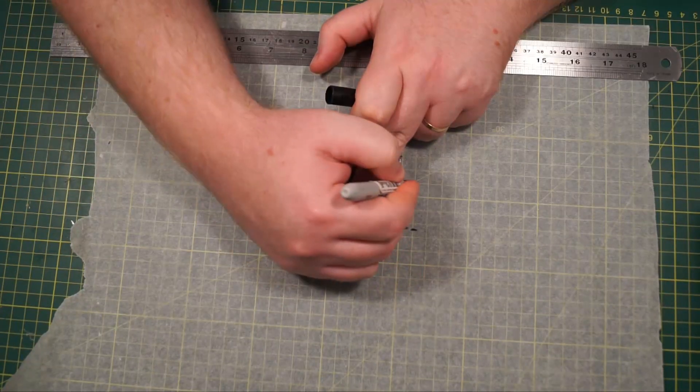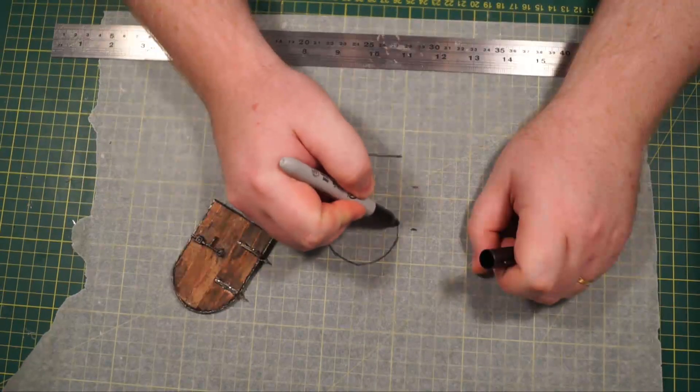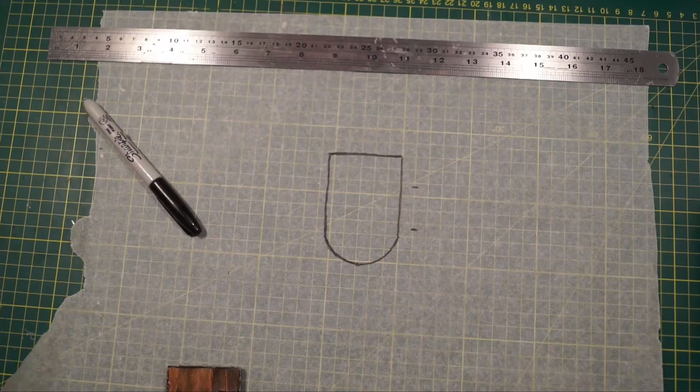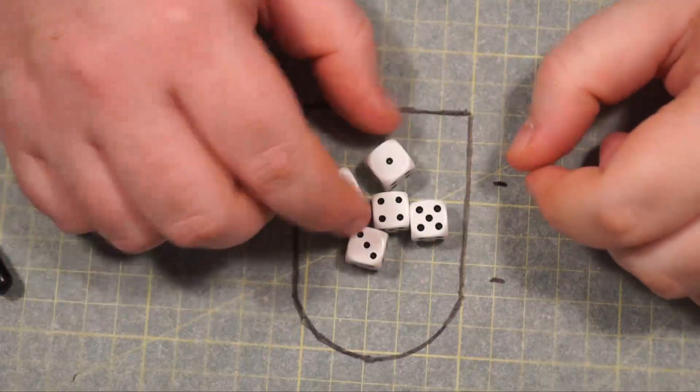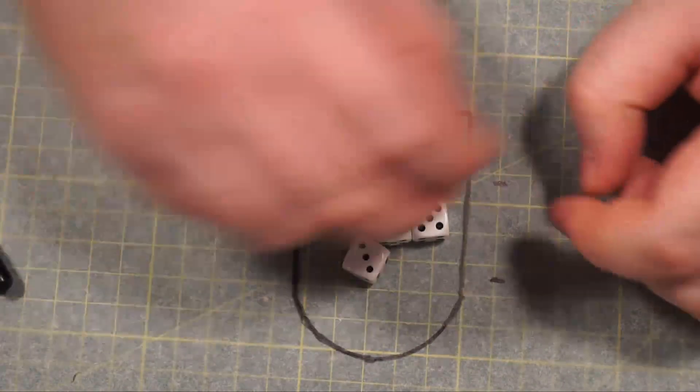Go around it with a Sharpie and mark where the hinge bits are and just grabbing some dice as some reference as to what we're actually going to be doing.